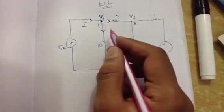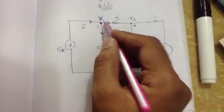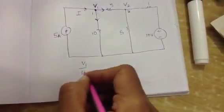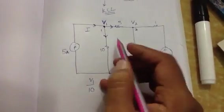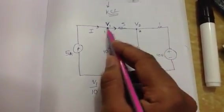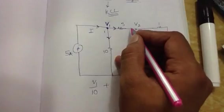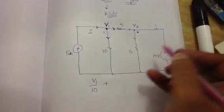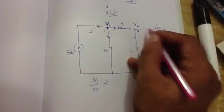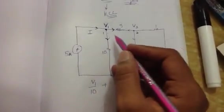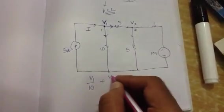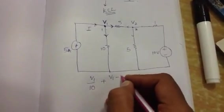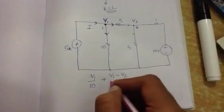It's V by R. So it's V1 by 10, V1 by 10 plus, see, here there are two voltage sources. Which means there is a voltage something like this, and something like this, and something that's coming in like this. So now this is going to be V1 by 10 plus V1 minus V2 by 3.